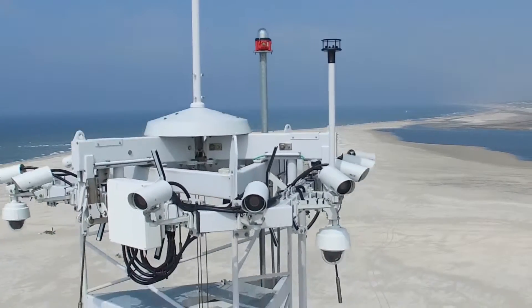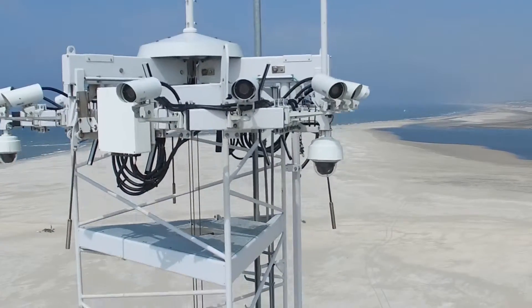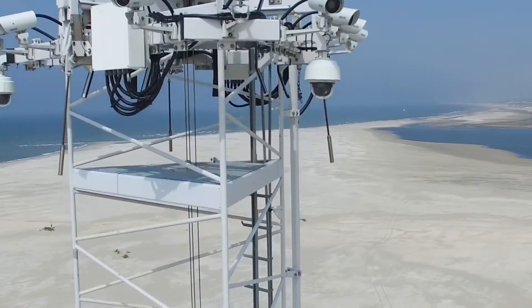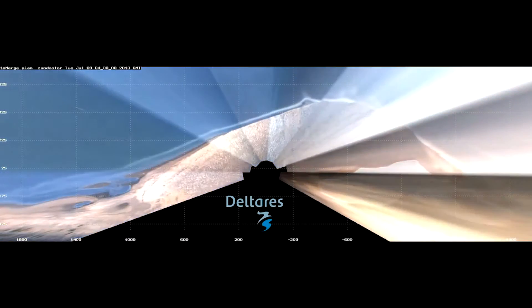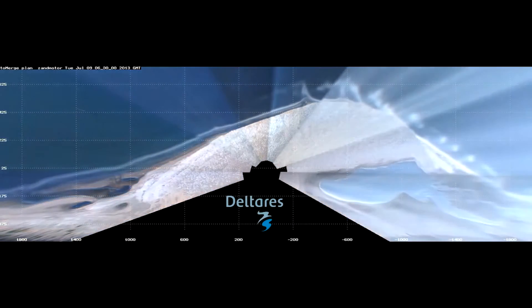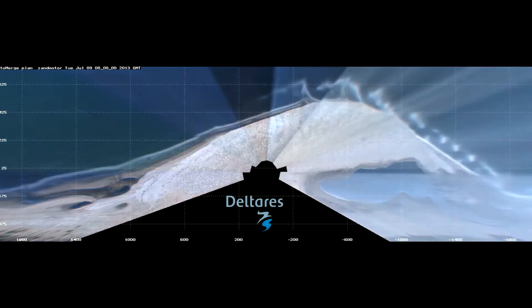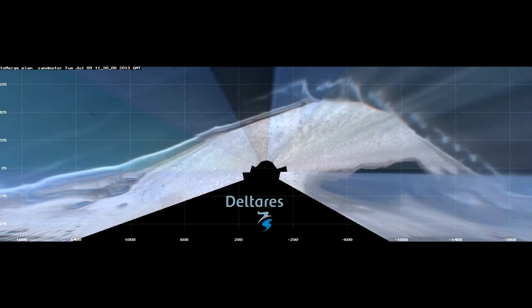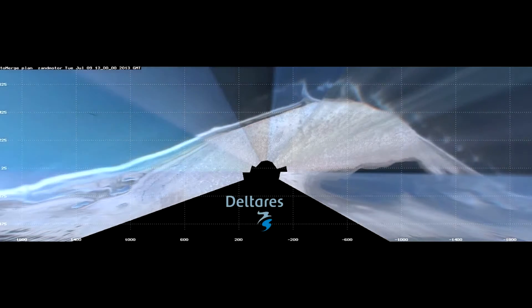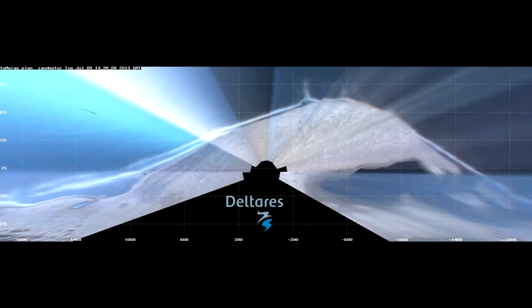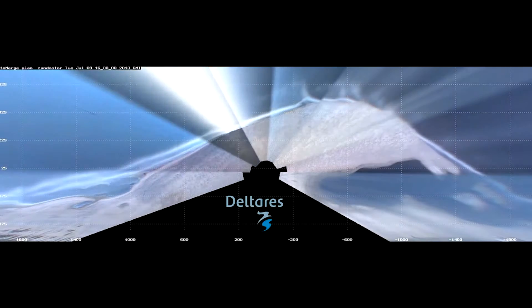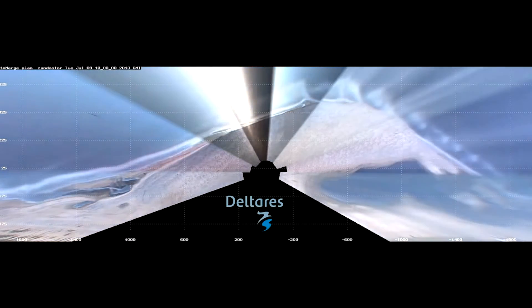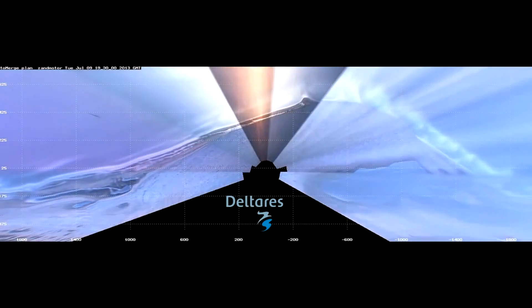The Argus Tower records the sea surface and in their images you can see how the waves propagate to the shore and where they break. From this information we can derive how deep it is and where the sandbars are located.